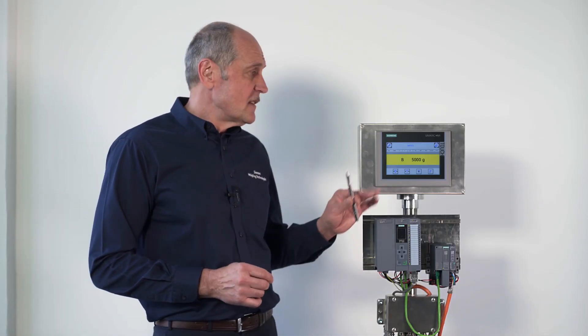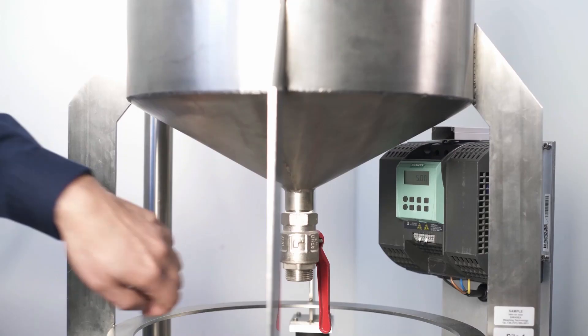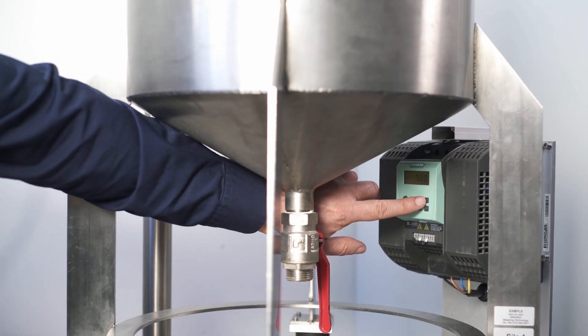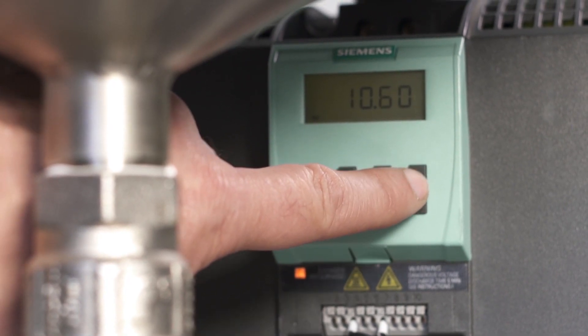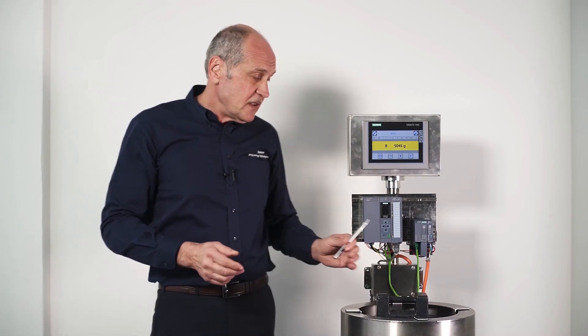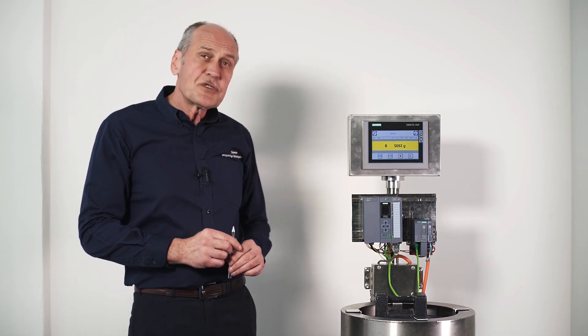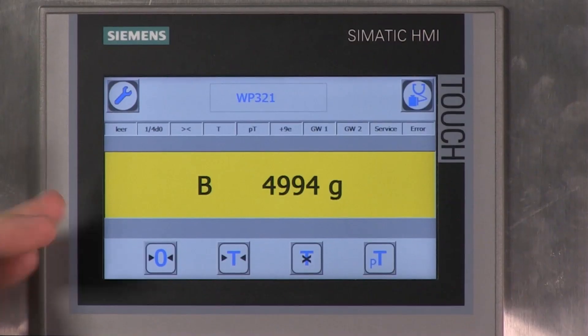Now let's turn on the vibrating plate and see what happens to our display. The vibrating plate is running, and you can see that the silo is moving back and forth together with the measured value.